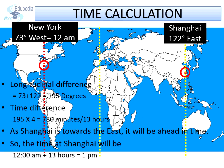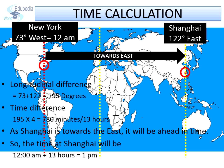One more example. Let's assume New York, which is 73 degrees west, has 12 AM, that is midnight. The longitudinal difference between New York and Shanghai will be 73 degrees plus 122 degrees, that is 195 degrees. The time difference will be 195 degrees multiplied by 4 minutes, which makes 780 minutes or 13 hours. As Shanghai is towards the east of New York, it will be ahead in time. So the time at Shanghai will be 12 AM plus 13 hours, which equals 1 PM.